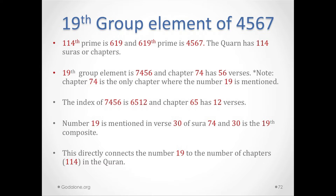The 114th prime is 619 and the 619th prime is 4567. The Quran has 114 chapters. The 19th group element is 7456, and chapter 74 in the Quran has 56 verses. Note that chapter 74 is the only chapter where the number 19 is mentioned.